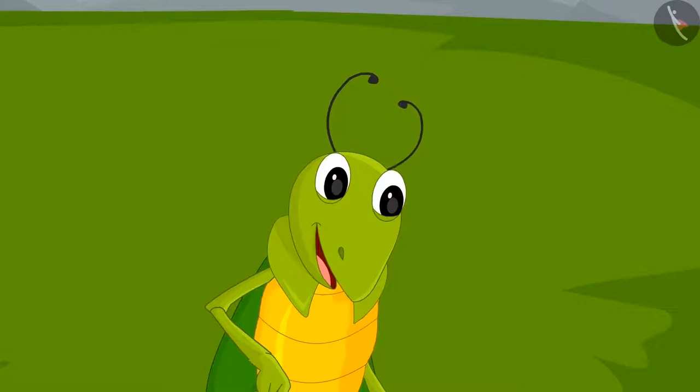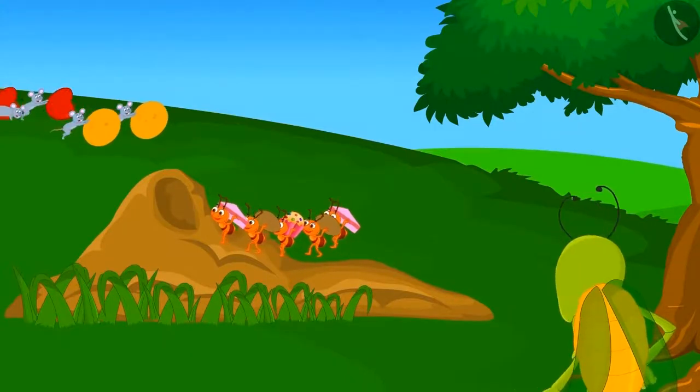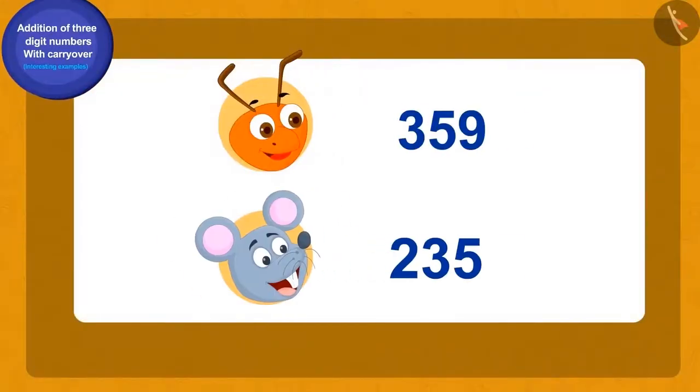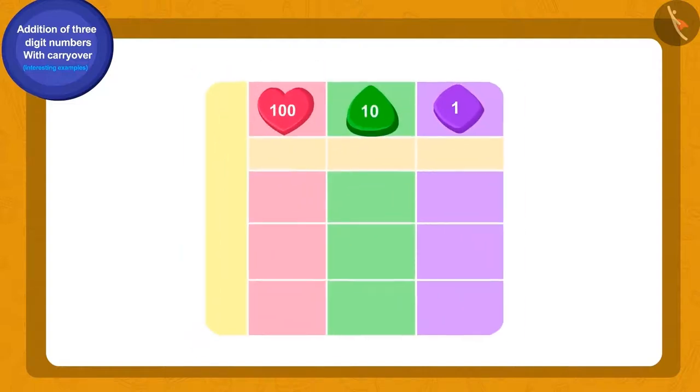The next day the grasshopper saw more ants and rats in the herd. Now there were 359 ants and 235 rats. Let us now see the total number of animals. Come, this time we will write 359 and 235 using the carryover places of hundreds, tens, and ones. Is this right?